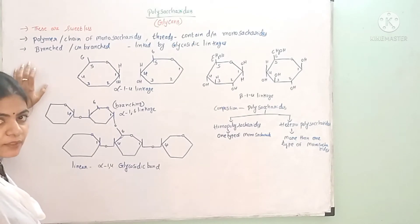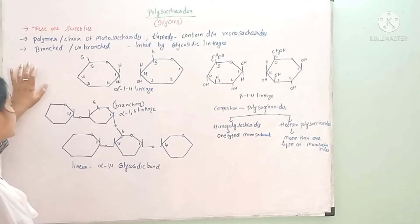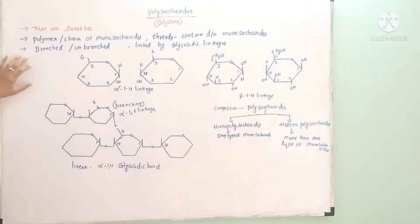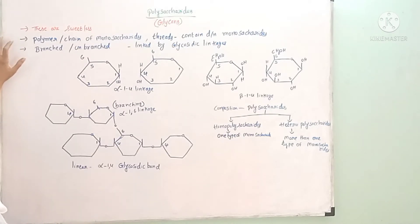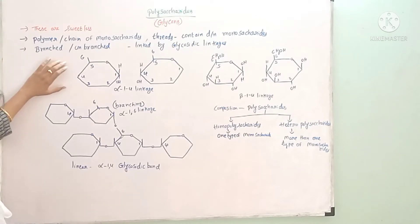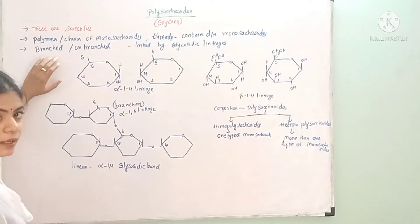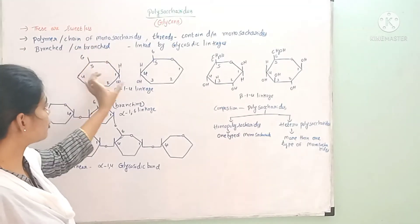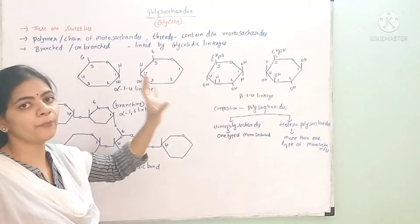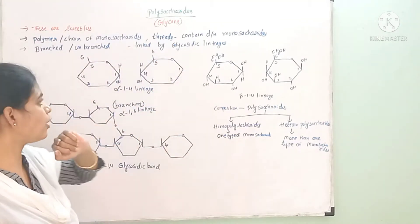There are sweet ones and sweetless ones. These are polymers. Polymers are different monomers — they are chains of monosaccharides. Monosaccharide units make up polysaccharides.